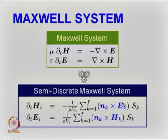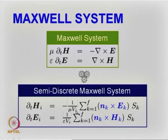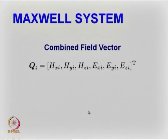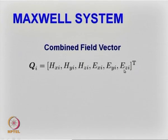The flux components are defined on the edges or faces of each control volume. S_k is the surface area of the k-th face, and there are k faces for control volume V_i, where k goes from 1 to F. What we have is a combined vector — in the three-dimensional case a six-component vector — corresponding to the magnetic field and electric field components of the i-th cell.